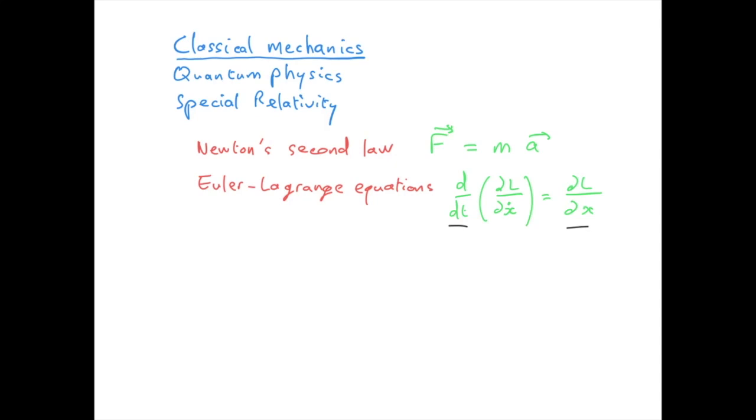We will soon take a simple example, but first let me define what is L. L is called the Lagrangian, and in classical mechanics it is simply defined as a difference between the kinetic energy and potential energy.